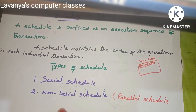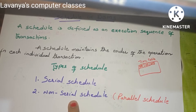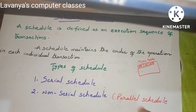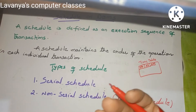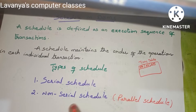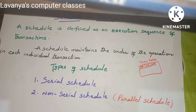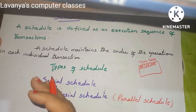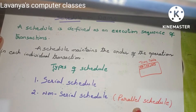There are two types of schedules. One is the serial schedule, and the second one is the non-serial schedule. Non-serial schedule is also known as parallel schedule. Serial schedule means executing the actions one after another in sequential order, but non-serial or parallel schedule means executing the transactions simultaneously — starting one action and without completing it, going to the second action as well.